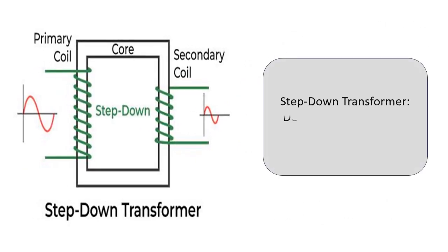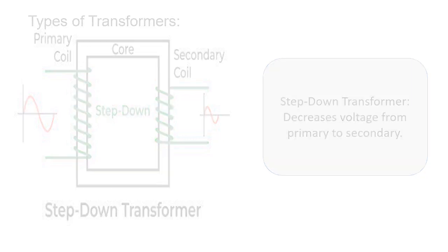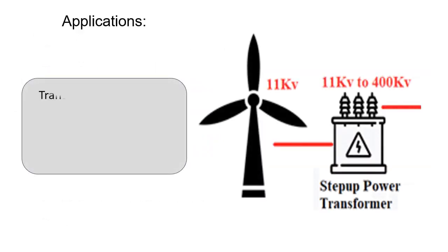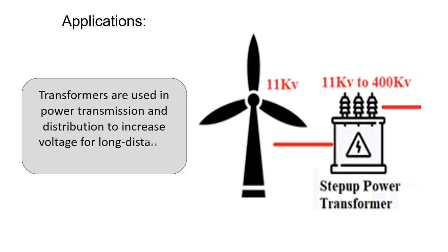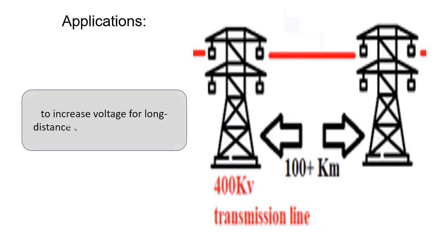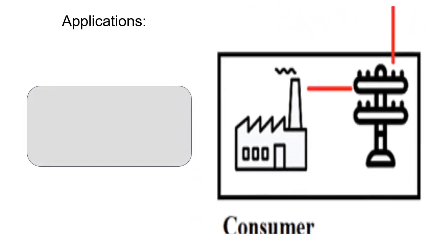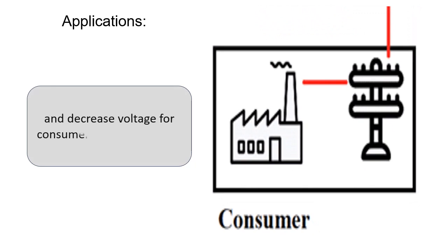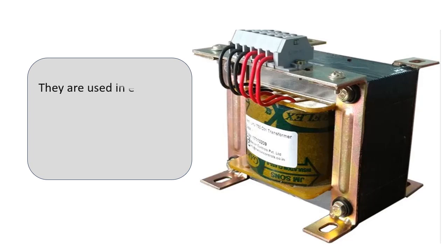Applications: Transformers are used in power transmission and distribution to increase voltage for long-distance transmission (step-up) and decrease voltage for consumer use (step-down). They are used in electronic devices like chargers and adapters to provide the required voltage for specific applications.